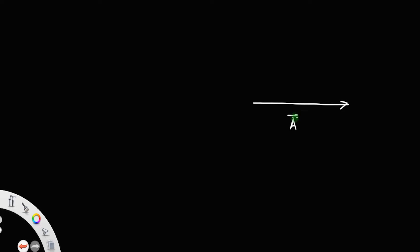Suppose you have two vectors, vector a and another vector b. Let theta be the angle between these two vectors. You have to find the resultant of these two vectors.